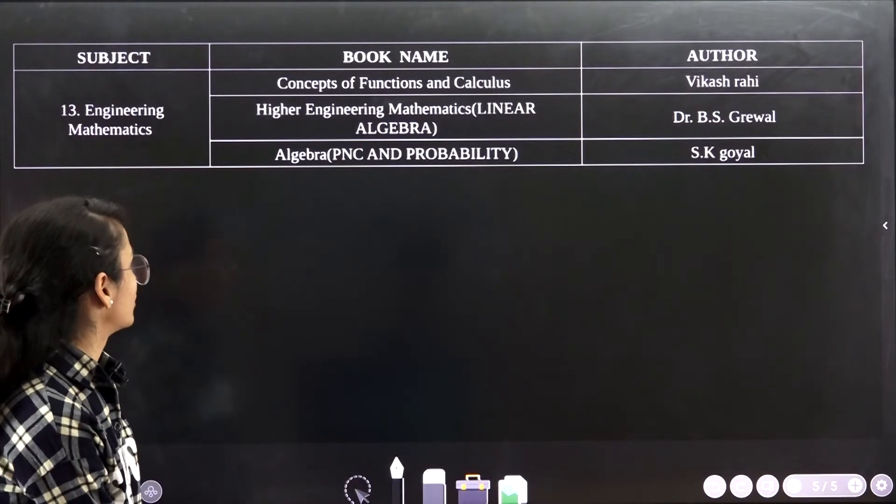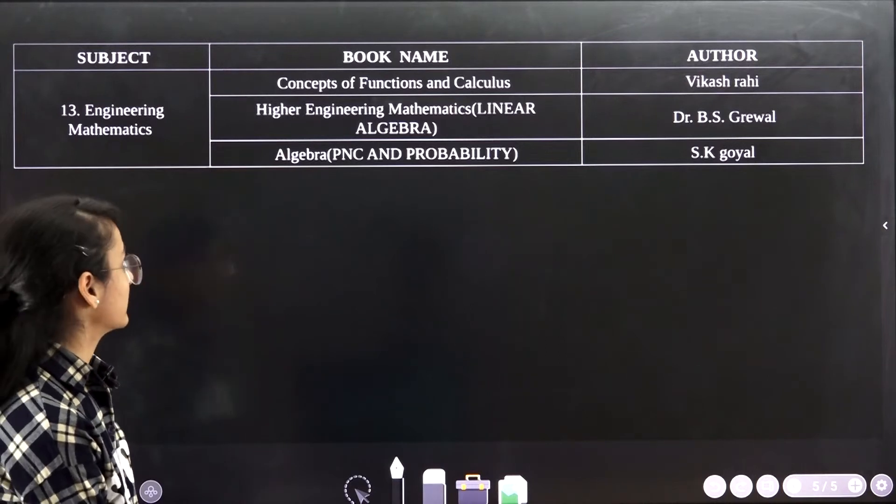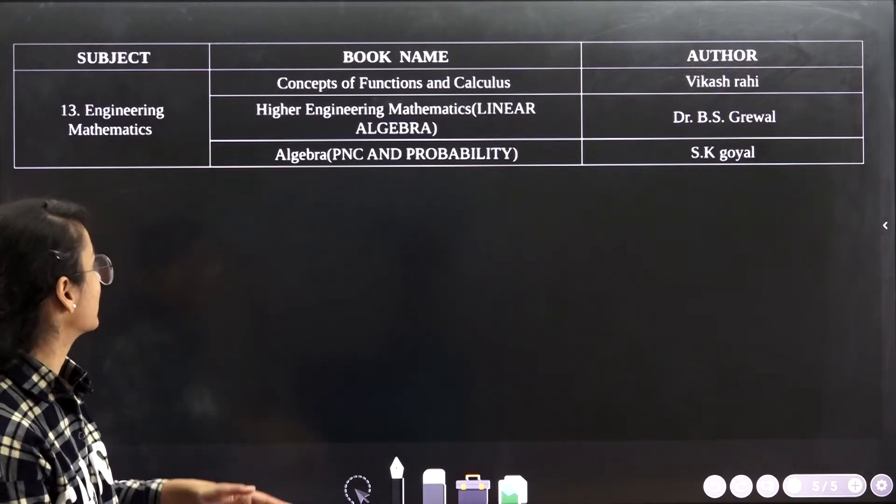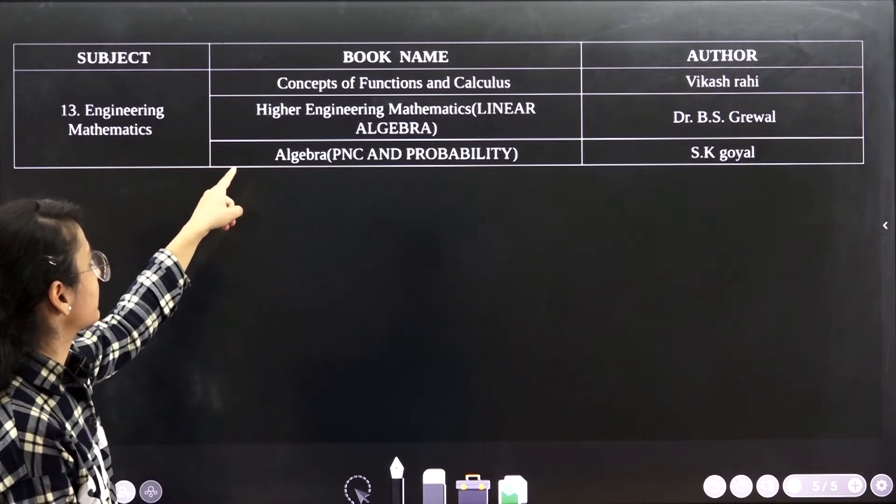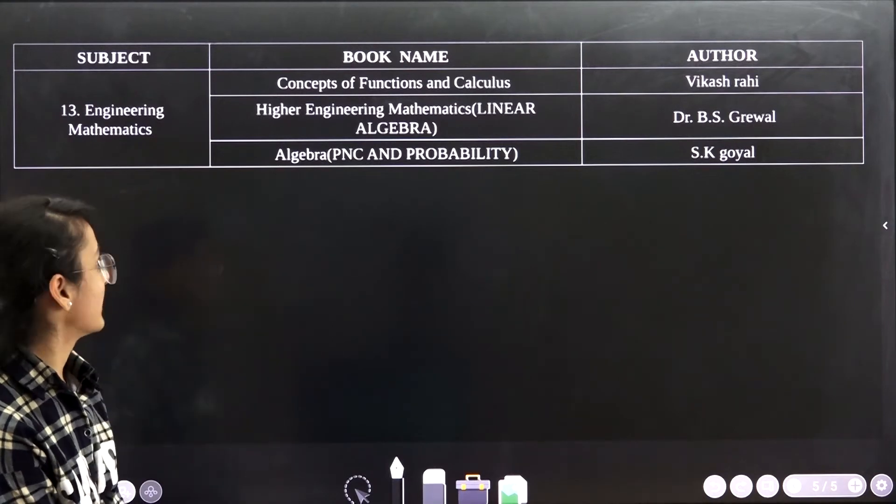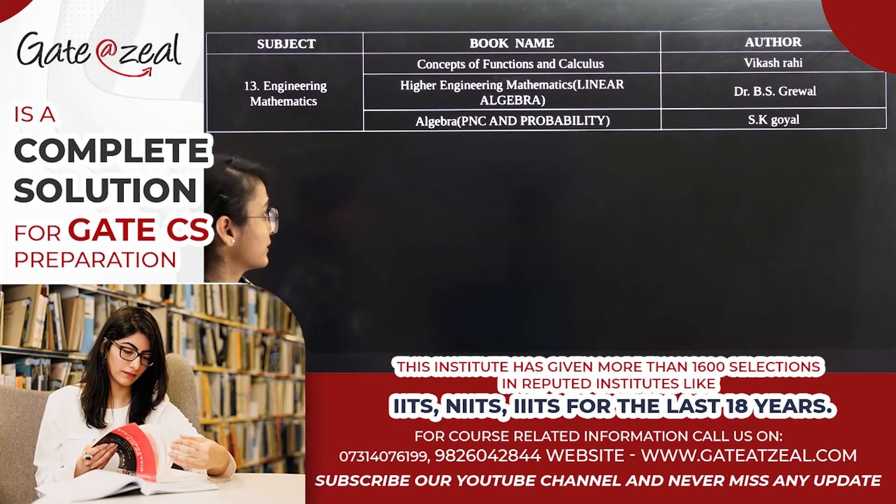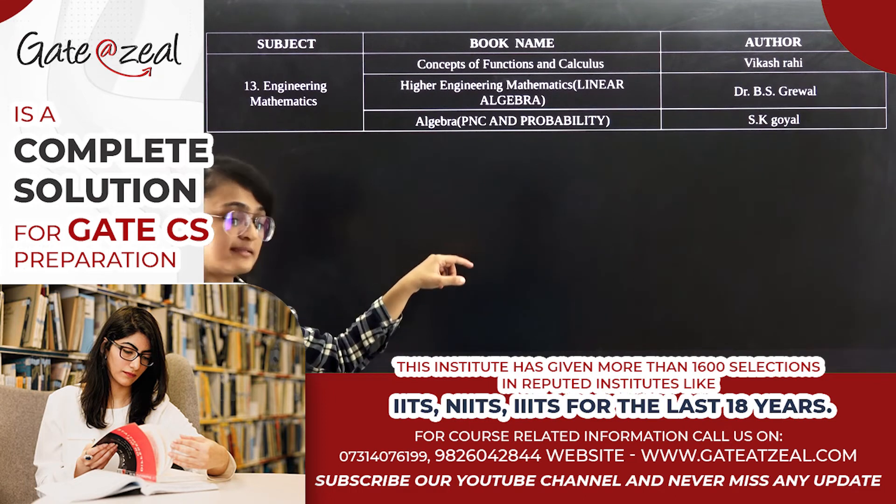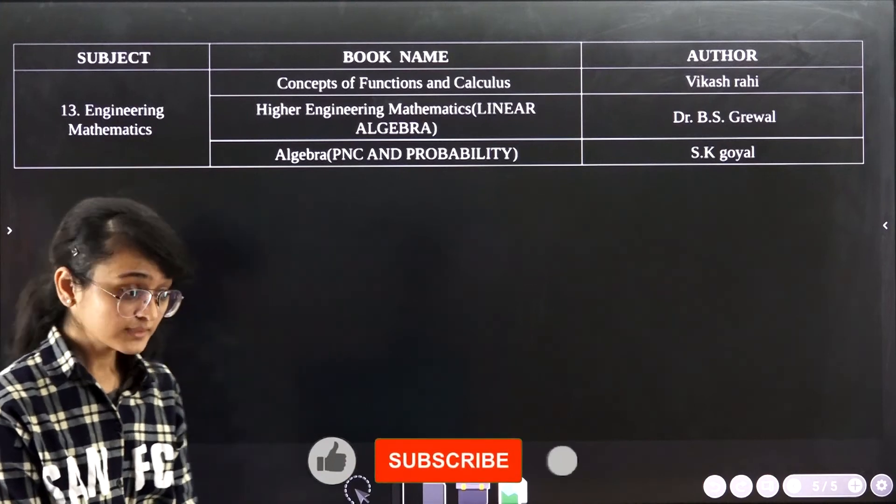And the last subject is Engineering Mathematics. This covers around 15 marks for the GATE. The books that I followed are Concepts of Functions and Calculus by Vikas Rahi, Higher Engineering Mathematics by Dr. B.S. Grewal, and Algebra, PNC and Probability by S.K. Goyal.